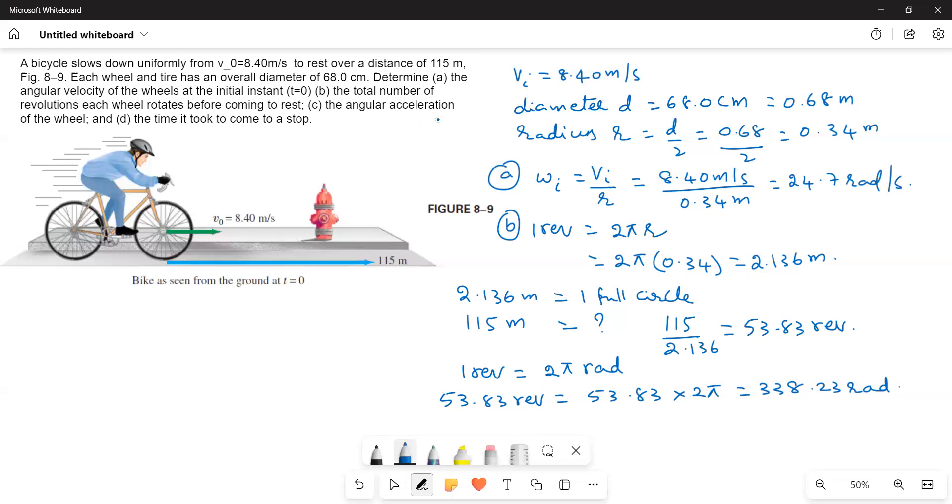Now the third part: finding the angular acceleration α. We know the equation: ωf² = ωᵢ² + 2αθ. From this equation, α = (ωf² - ωᵢ²)/(2θ).